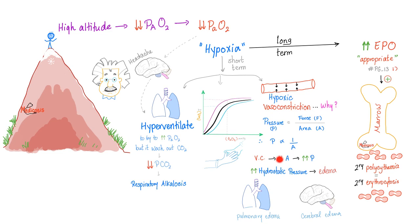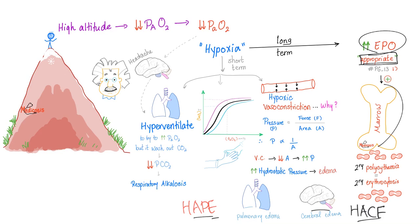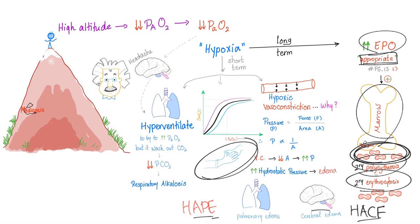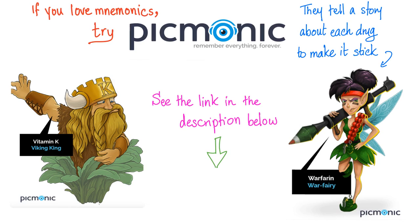High-altitude pulmonary edema leads to cough, shortness of breath, and pink frothy sputum. High-altitude cerebral edema leads to headache, unsteady gait, nausea, vomiting, retinal hemorrhage, and possibly loss of consciousness. Long term, EPO increases appropriately, signals the bone marrow to cause secondary polycythemia and secondary erythrocytosis. When you have more red blood cells plus a right shift of the oxygen dissociation curve, you're doing your best to treat the hypoxia.